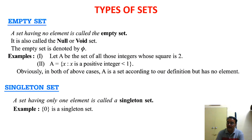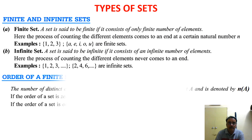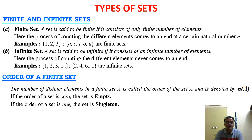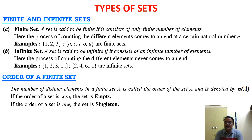Now let us move to another type: finite and infinite sets. A finite set is one that has a finite number of elements — elements that can be counted. For example, the set {1, 2, 3} has 3 elements, and the set {A, E, I, O, U} has 5 elements. Both can be easily counted, so these are finite sets.